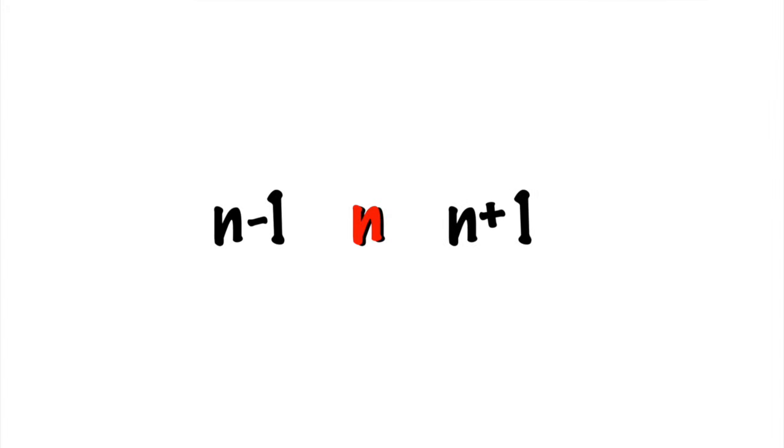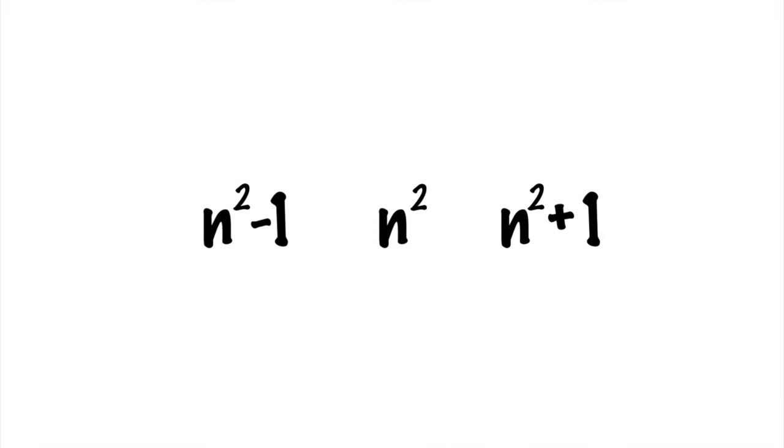Okay, well, what if n isn't divisible by three, but n minus one is divisible by three? Well, if we take a look at our other sequence, notice that the guy on the left here is a difference of squares. That means you can rewrite it as quantity n plus one times quantity n minus one.